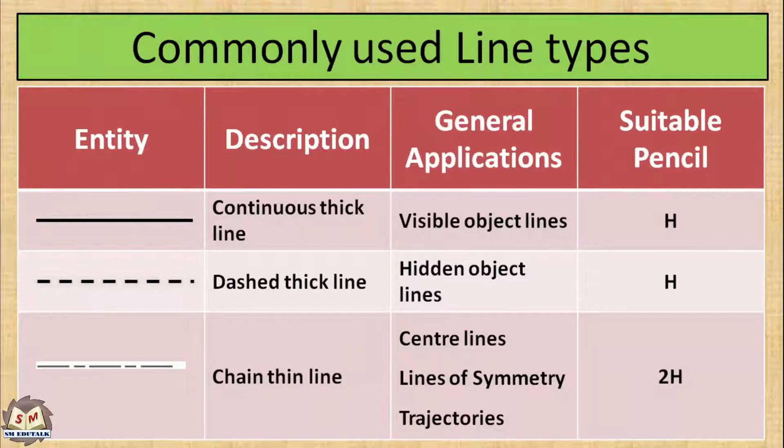Now let us see some of the commonly used line types. The first one, continuous thick line. It is generally used to represent all visible object lines. For drawing this, we have to use H grade pencil.